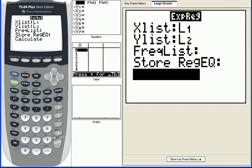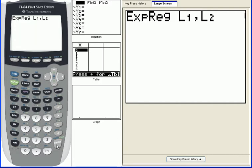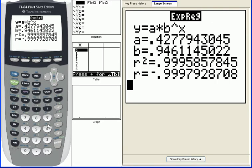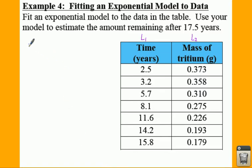And so if this calculates, maybe today, then we're going to have a model of 0.4278 times our B, which is 0.9461 to the power of X. So we're going to write down our model.